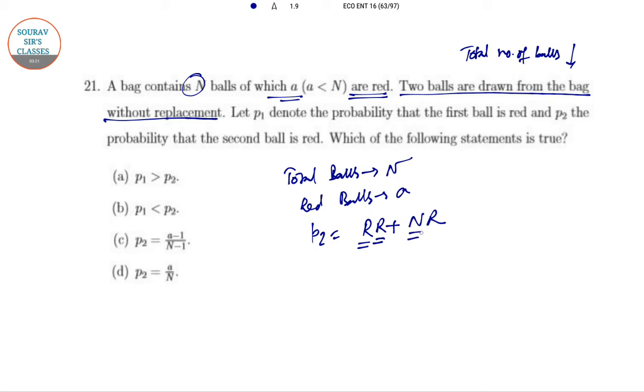This can be written as: (a/N)×(a-1)/(N-1) + (N-a)/N × a/(N-1). After simplification: [a(a-1) + a(N-a)]/[N(N-1)].